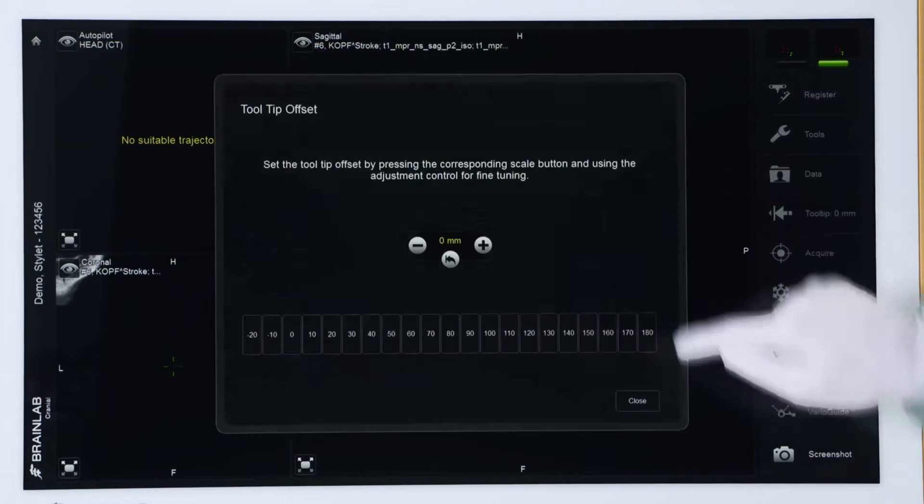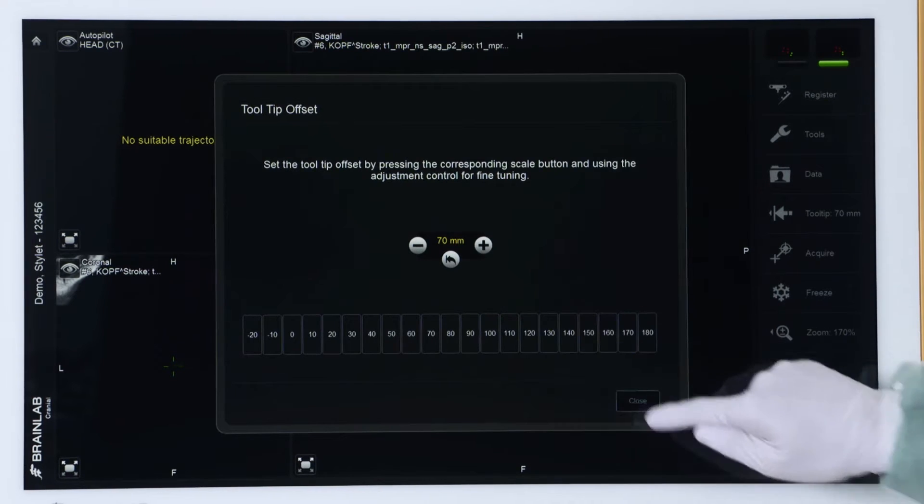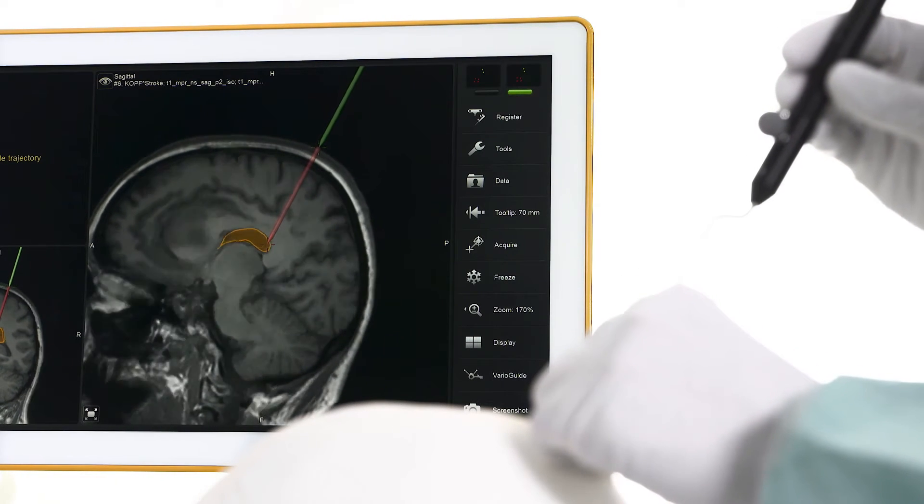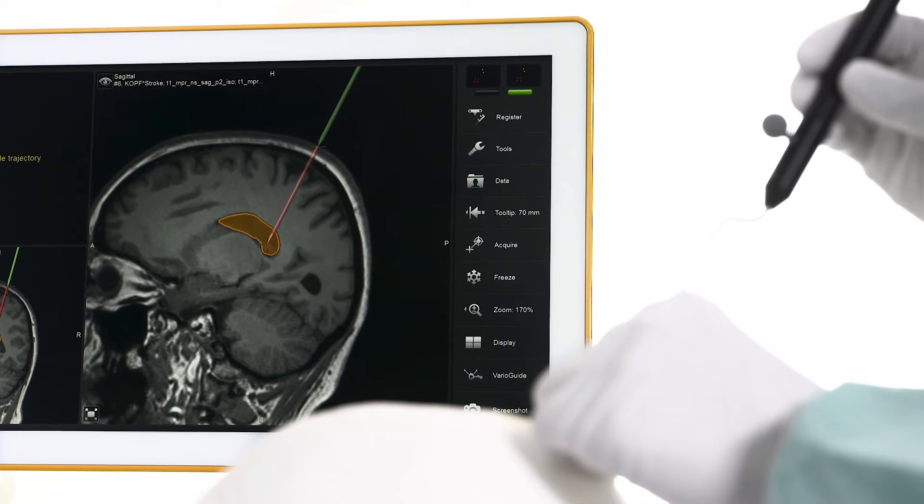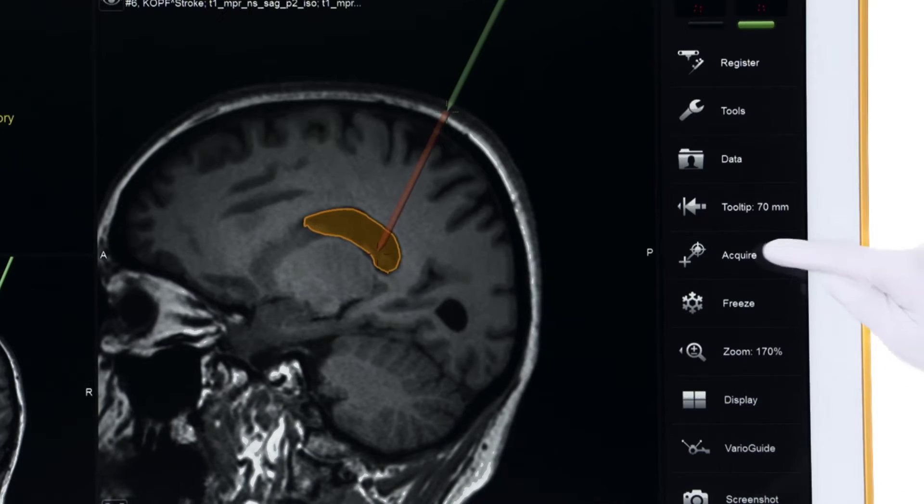With BrainLab navigation, surgeons can plan trajectories for catheter placement, so even complex procedures like shunt placement in slit ventricles can be successfully performed on the first try.